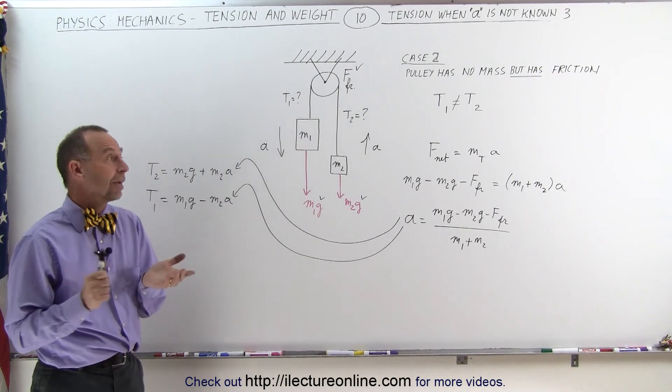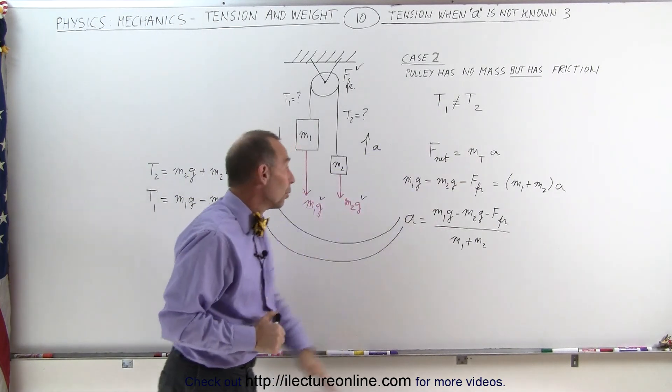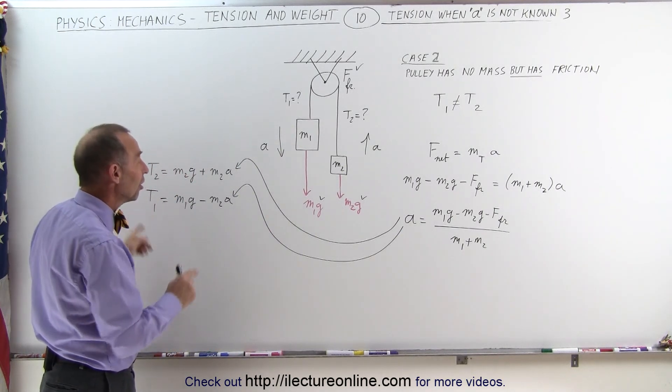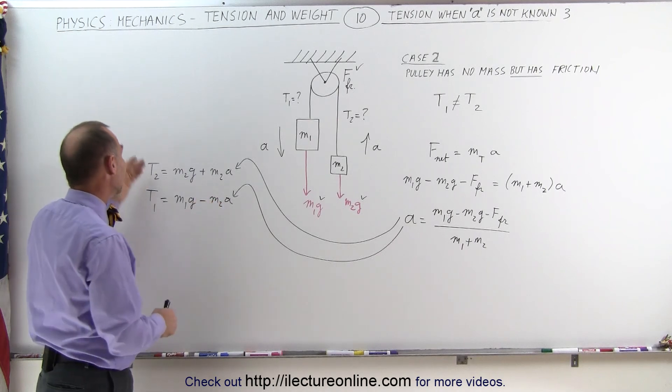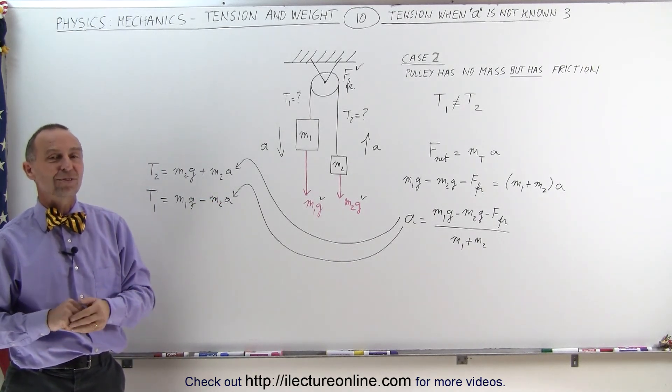But again, that's how we do it, realizing that if there's friction force, we can assume that this is not the same. We can assume that we can use the exact same two equations to find T1 and T2. That has not changed, but the acceleration will be such that those will not be equal to one another. And that's how it's done.